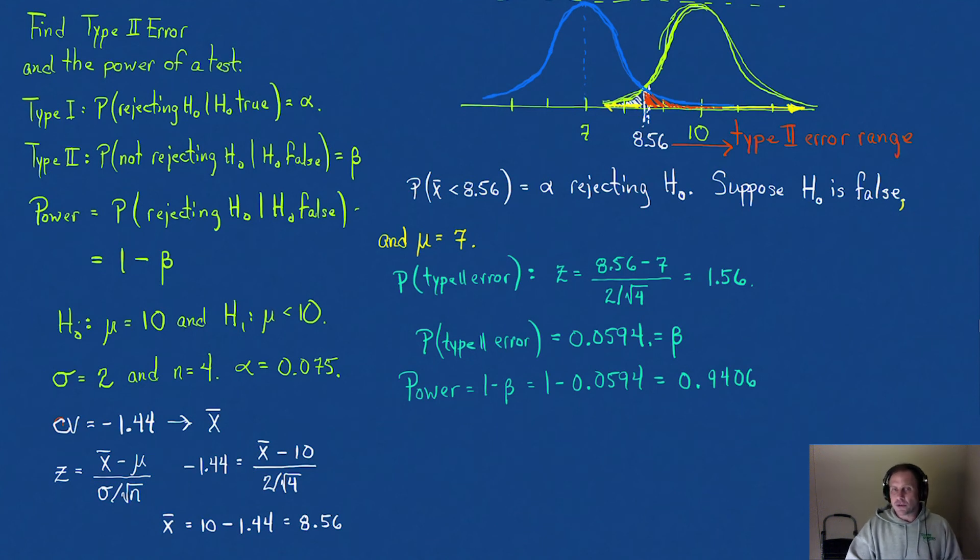So how do you control these things? You can never get rid of one. You can reduce one at the expense of the other. Suppose that instead of using alpha of 0.075, maybe we use 0.01. The 8.56 would have been shifted to somewhere way out here. So now the probability of rejecting the null hypothesis would just be that little tail. But in this case, we want to reject that null hypothesis. Look at what happened. By doing that, we increased beta. Beta now is all of this. So by reducing the probability of a Type 1 error, we made the probability of a Type 2 error bigger.